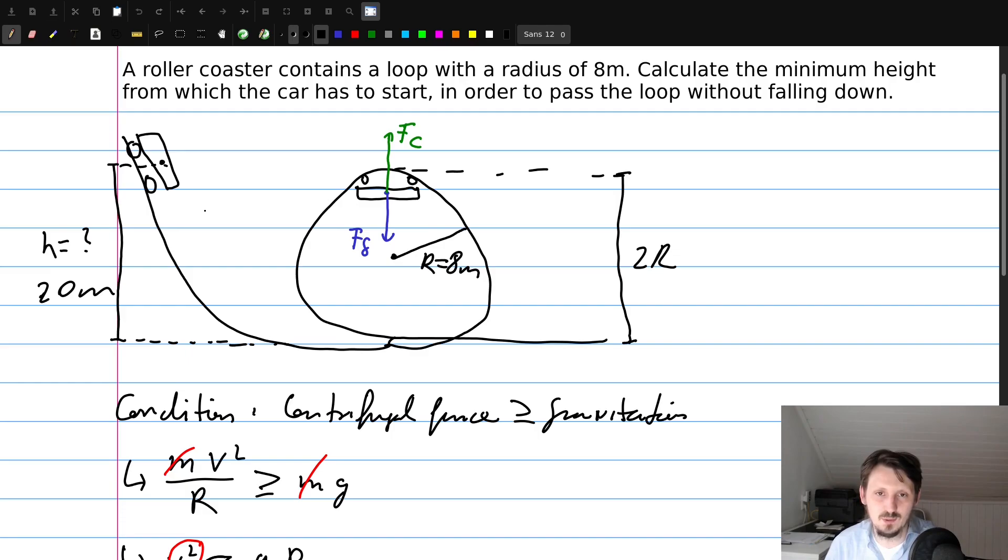And here in this case, the exercise is really in a way that you don't need to know the motion of the car or the train in every point of this track. It is just enough that you know the initial condition and the condition at the maximum, where it actually should not fall down. And then you can just use energy conservation to solve this problem.